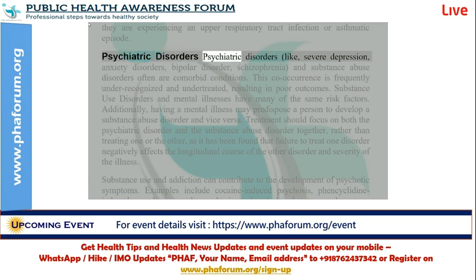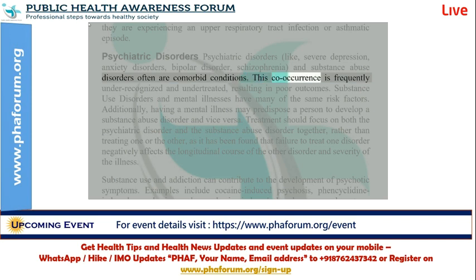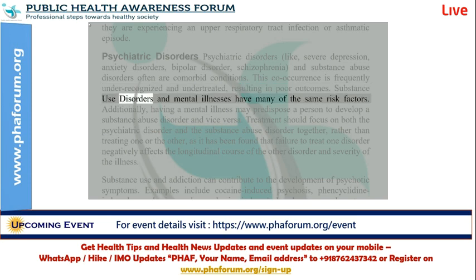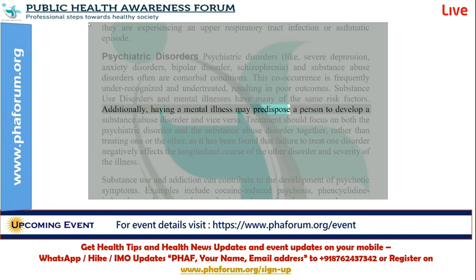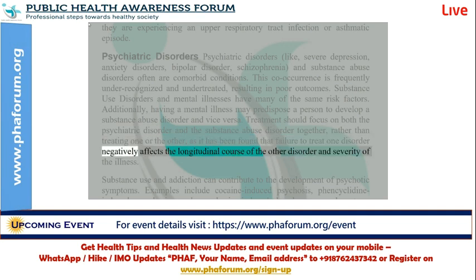Psychiatric disorders like severe depression, anxiety disorders, bipolar disorder, schizophrenia, and substance abuse disorders are often comorbid conditions. This co-occurrence is frequently under-recognized and under-treated, resulting in poor outcomes. Substance use disorders and mental illnesses have many of the same risk factors, and having a mental illness may predispose a person to develop a substance abuse disorder and vice versa. Treatment should focus on both the psychiatric disorder and the substance abuse disorder together, as failure to treat one disorder negatively affects the course of the other disorder and severity of the illness.